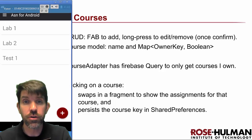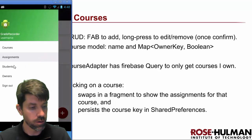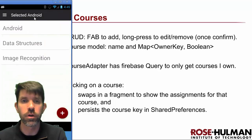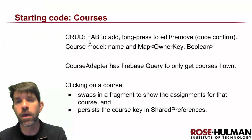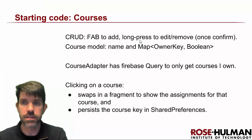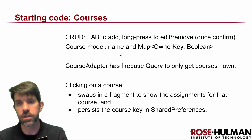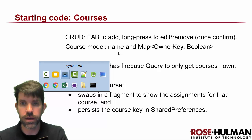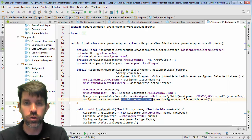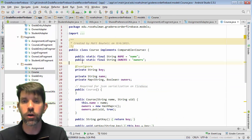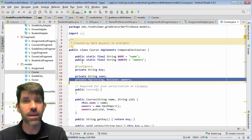Let's keep looking at our starting code. Going into courses, I have an interface where I can do CRUD methods on the different courses. The course model is a little different - let's jump into the models. A course has a key and a name, but a course doesn't have a single owner.